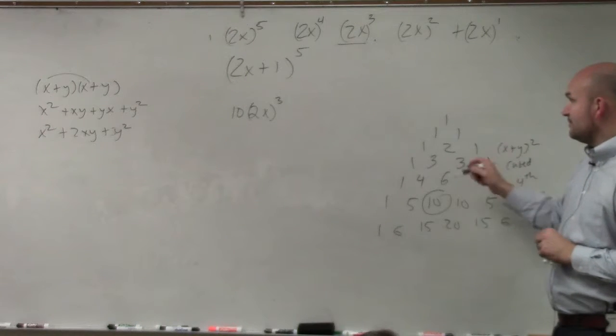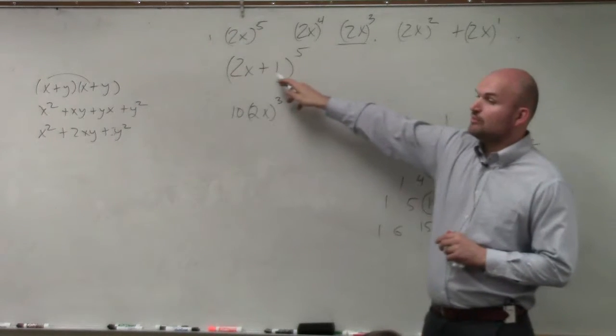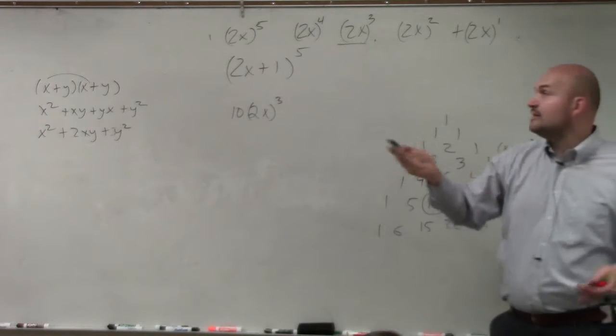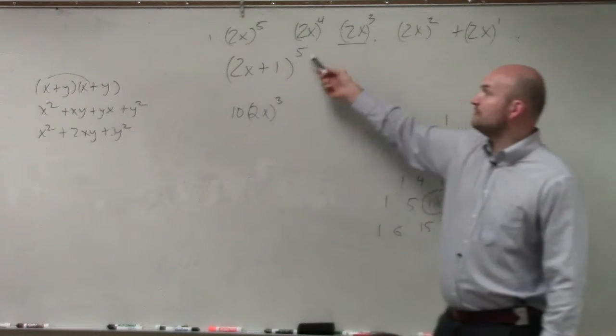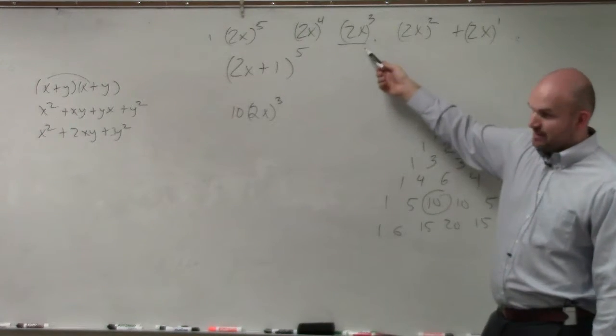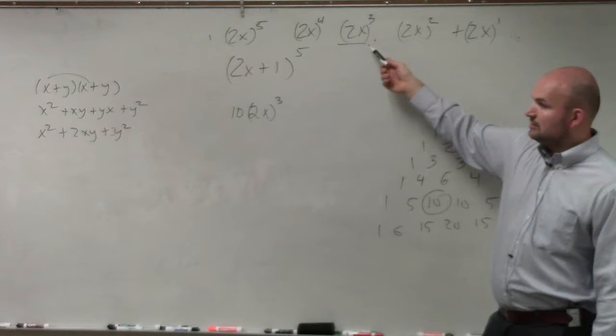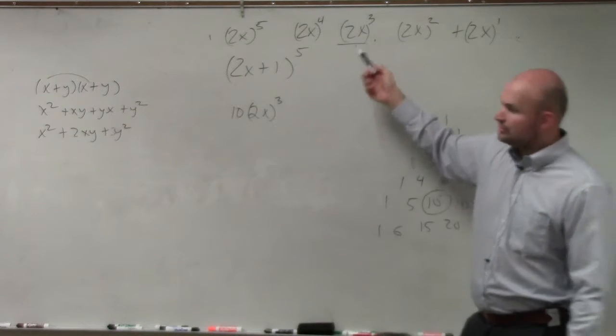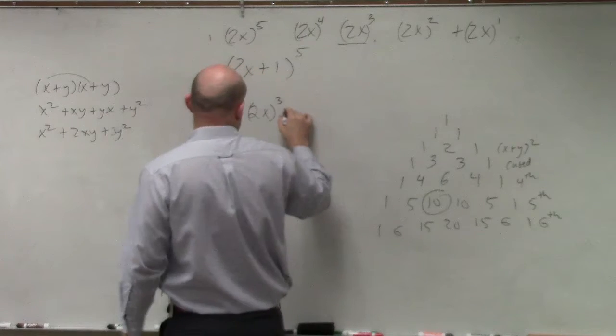Then we also have to do the last term, which is y, which would be 1. And then that should be 1 to the 0, 1 to the first, 1 to the second power, which is 1 to the second power, which is still just 1. But let me just write it up there.